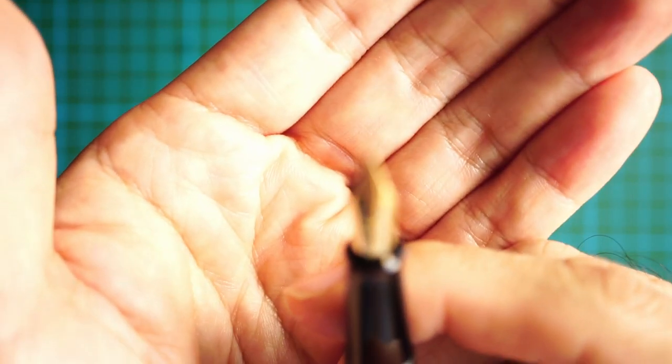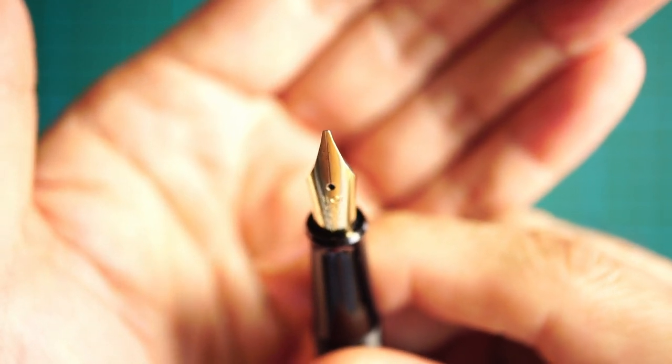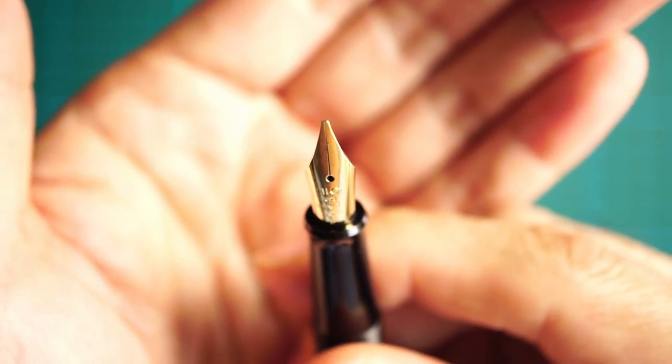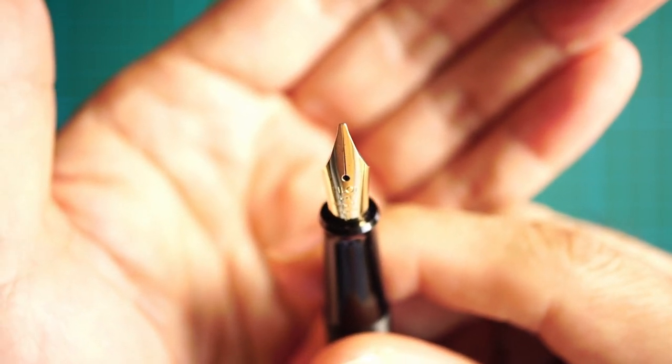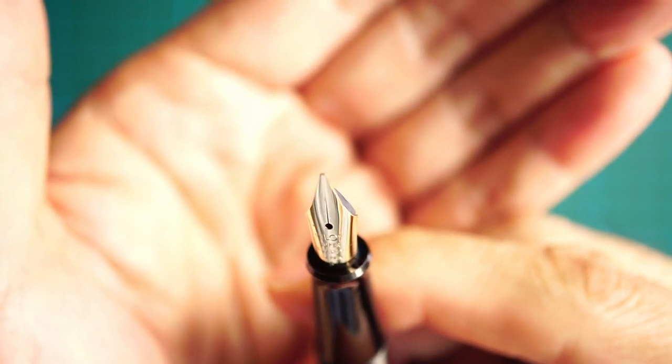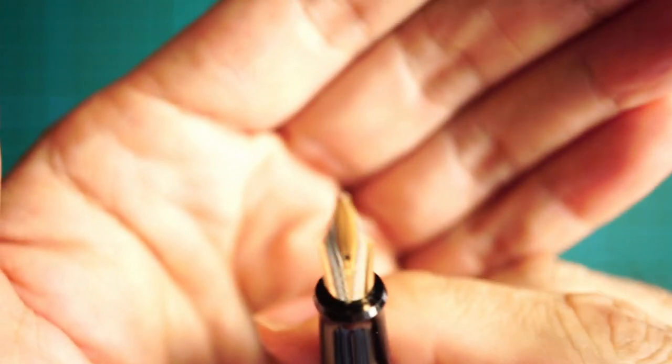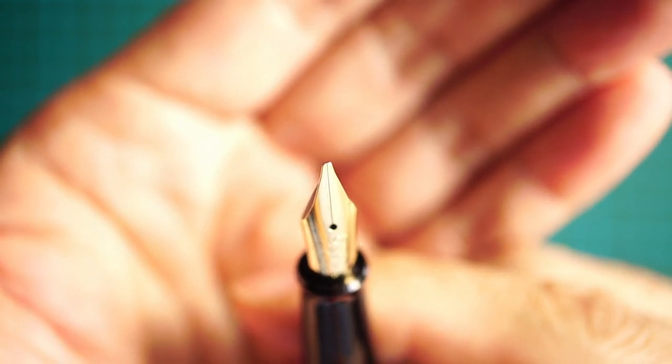Interesting thing about the 78G Broad nibs—the pen actually comes in fine, medium, and broad. In the past, they used to come with a double broad. But for my particular nib, which is a broad, you can see very clearly that the nib doesn't have much tipping.